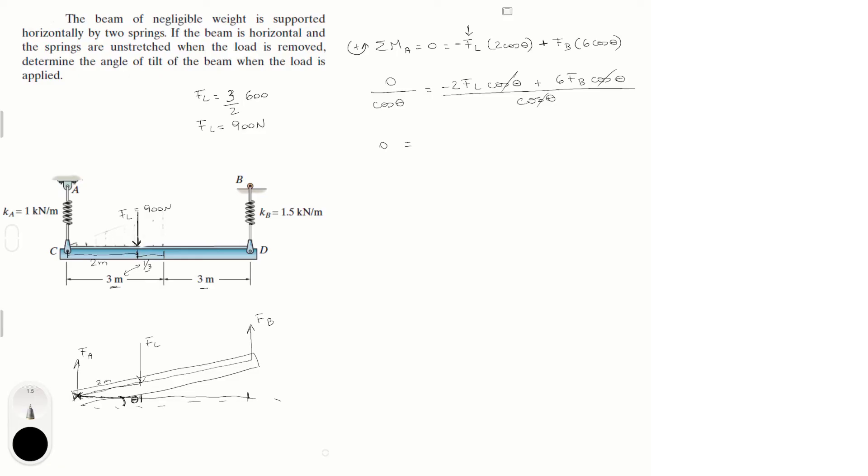And I'm going to plug in F_L, which is nine hundred. So this would be minus eighteen hundred plus six F_B. So we solve for F_B, and you know that F_B is equal to three hundred newtons. And we're going to use this to determine the angle later.